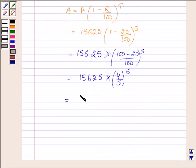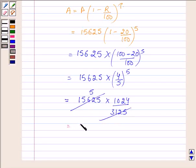So this is further equal to 15,625 into 1024, which is 4 raised to the power 5, upon 3,125. And on cancelling we have 5, which is further equal to 5 into 1024, which is equal to 5,120.